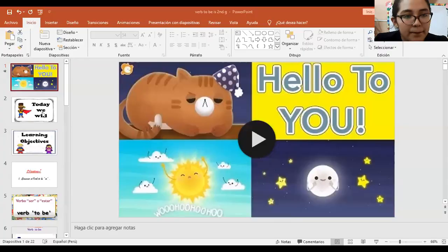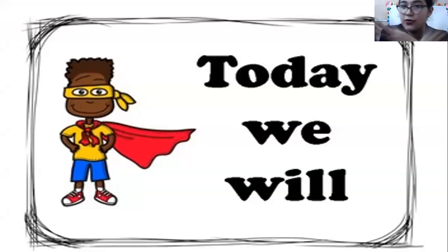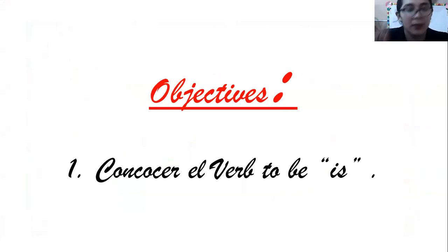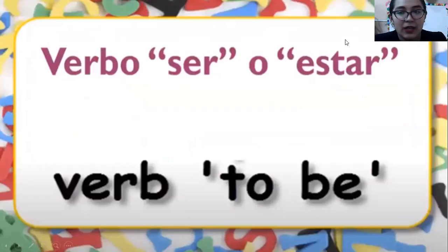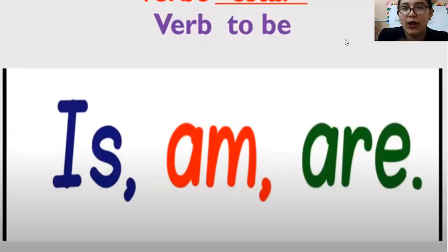So, now, today — hoy, nosotros — vamos a conocer el verb to be. El verb to be, is. ¿Recuerdan que les dije que habían three verbs to be? Pues vamos a conocer el verbo to be, is. Recuerden, chicos, que el verb to be significa ser o estar. Hay tres. En el video anterior hemos estudiado am. Ahora tenemos que estudiar is, y luego are.